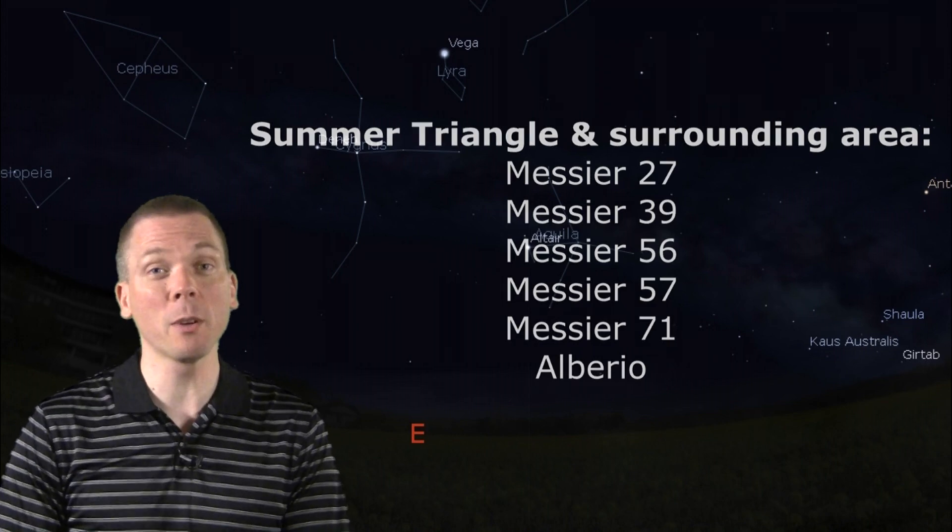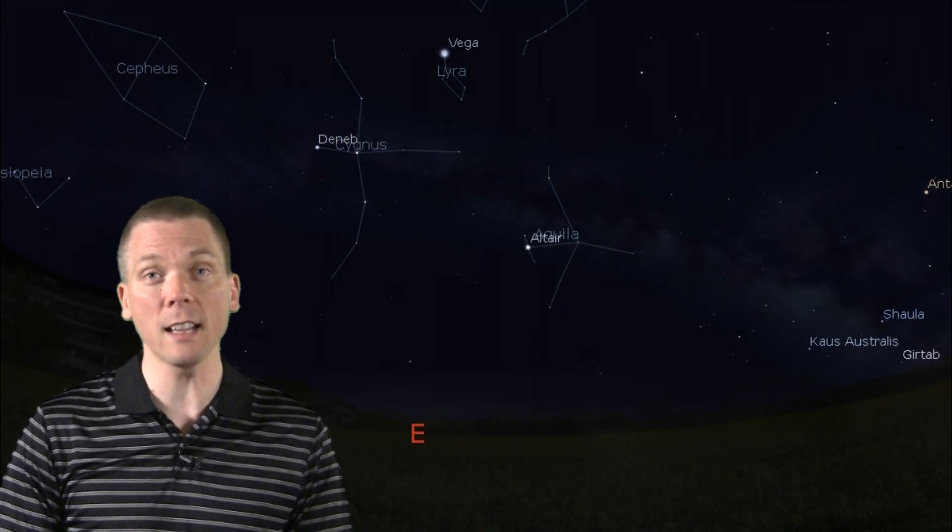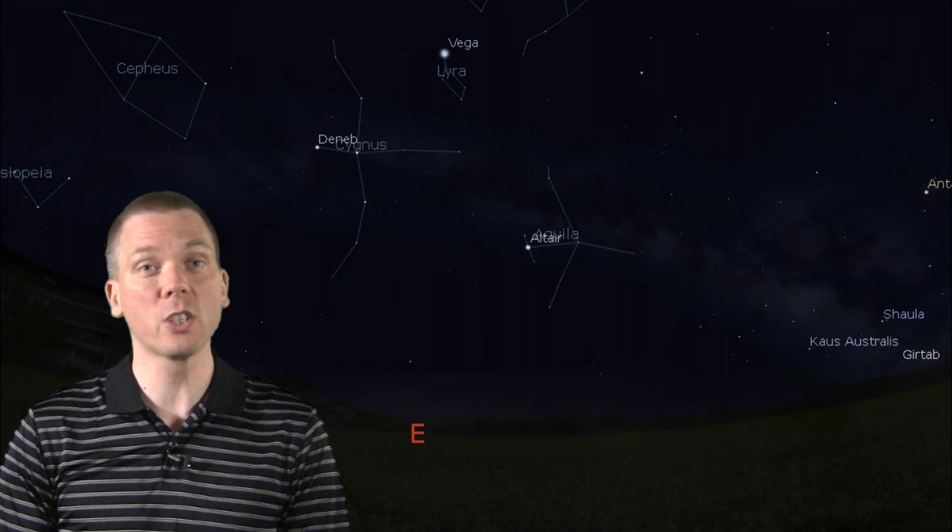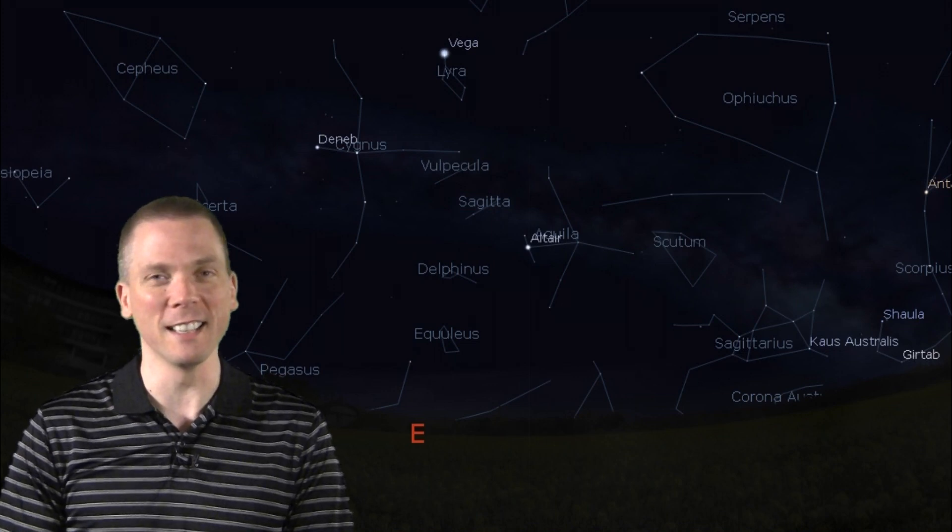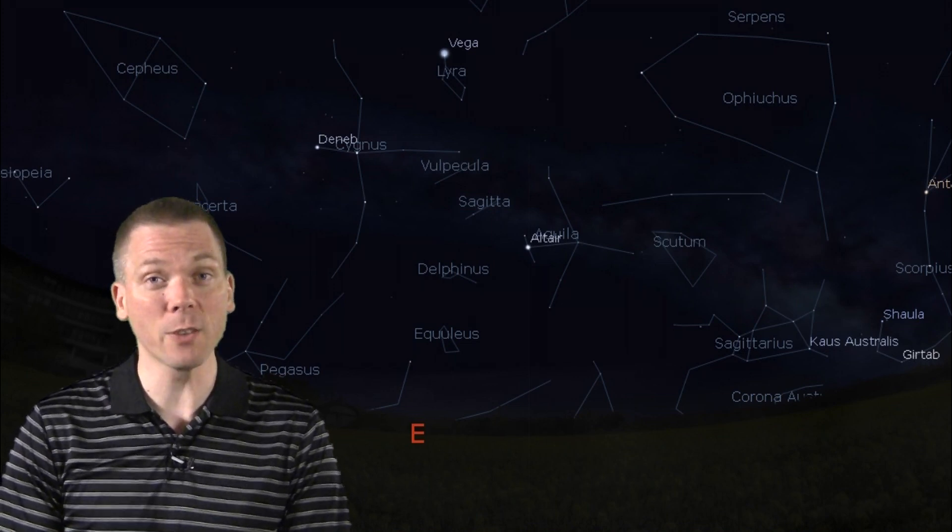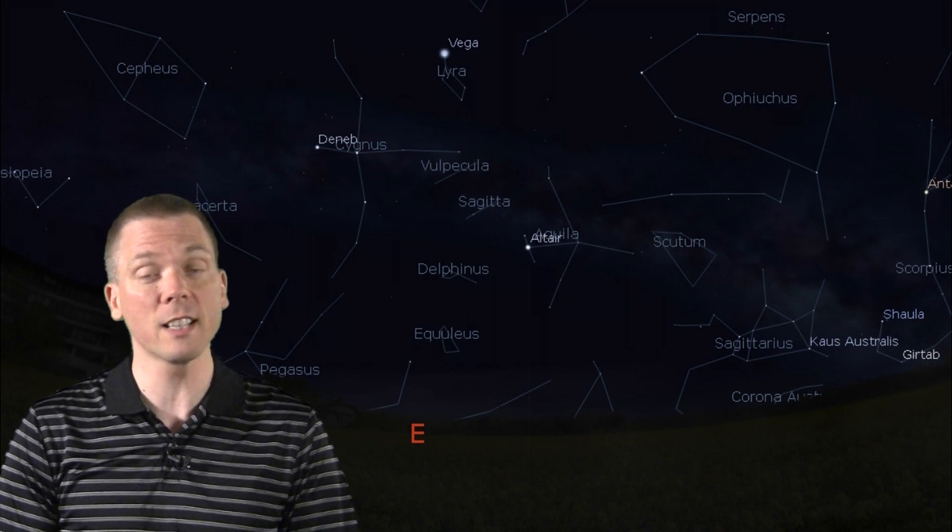But the real treats of summer lie towards the south. As we follow the stream of stars from our galaxy this direction, we find ourselves at Scutum the Shield, a dim constellation, but with several gems hidden inside. There is a bright patch of the Milky Way here, where dust does not obscure our view of the stars that lie in that direction.